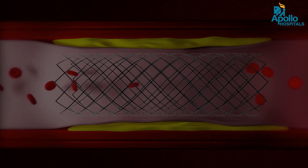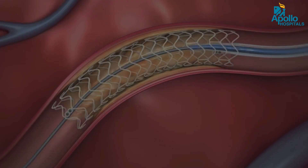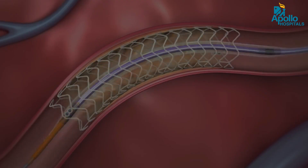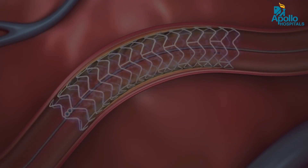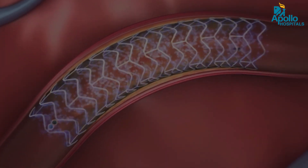The stent is only 60 to 80 microns in thickness — it is a very thin device. After implantation, the balloon, the wire, and the catheter are all taken out of the system. The coronary stent remains inside the blood vessel for life.